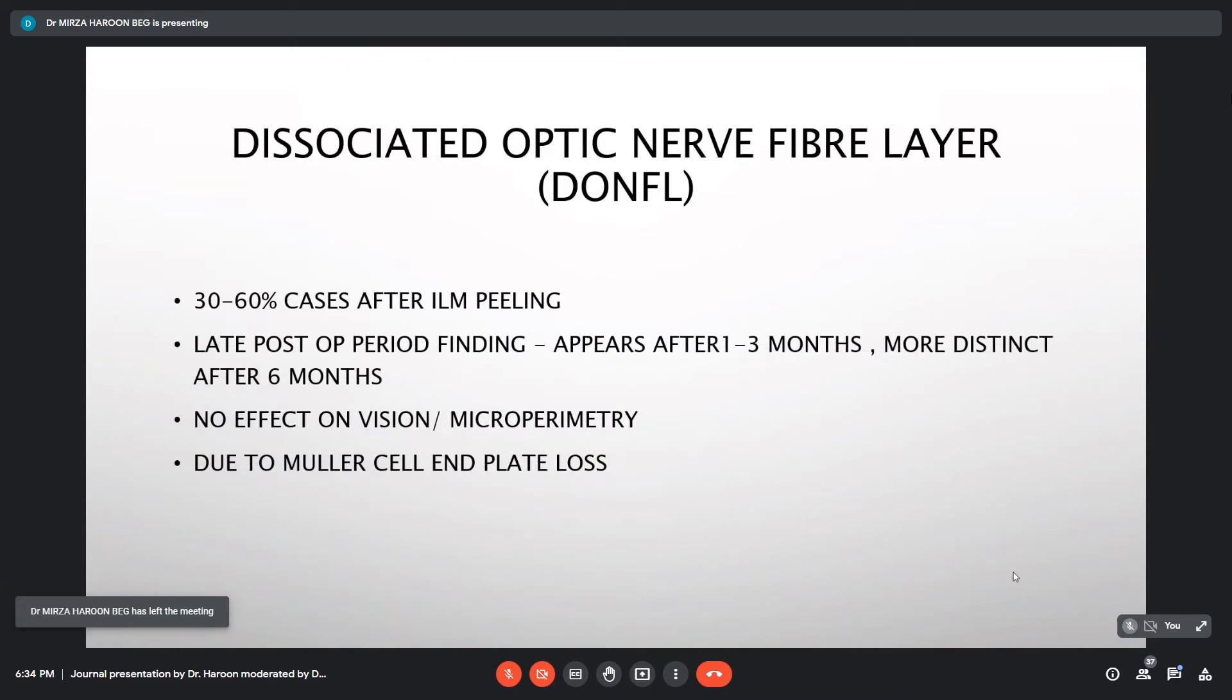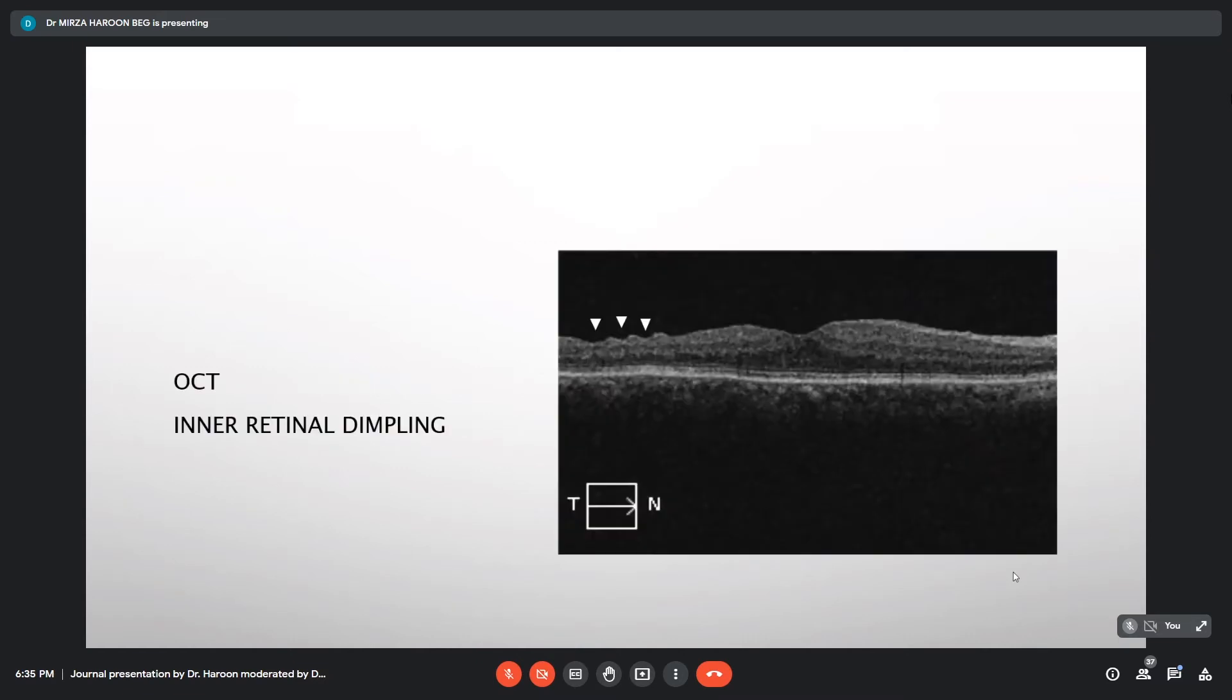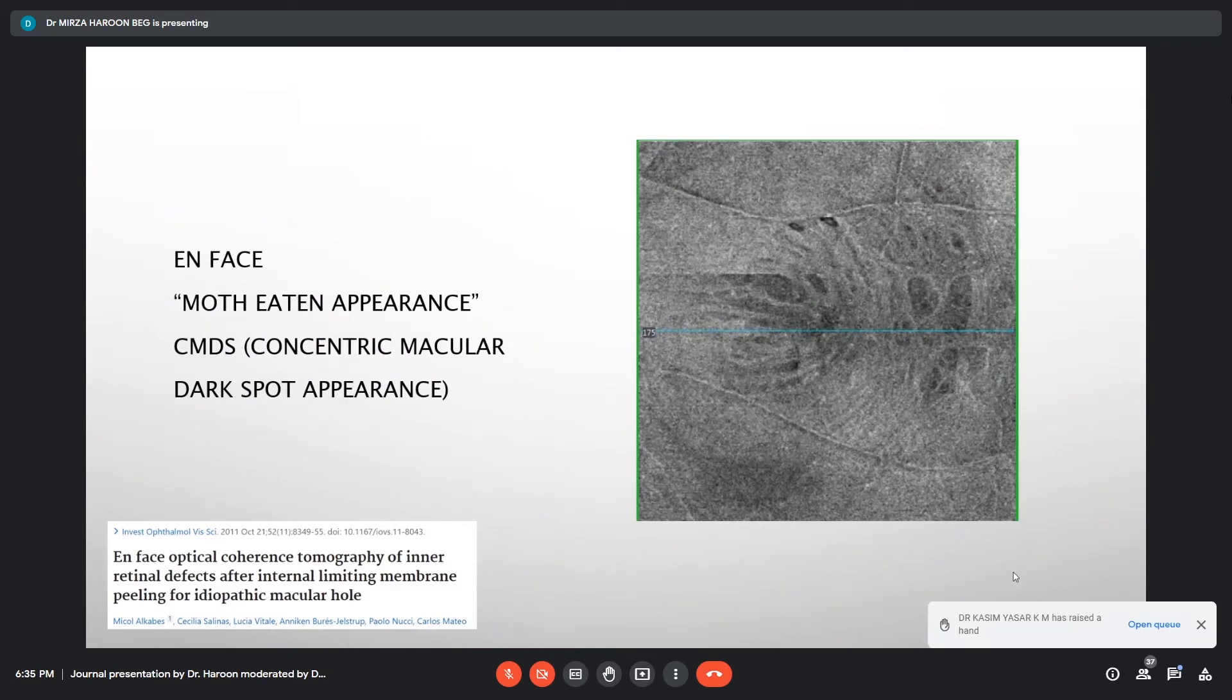So till now what do we know about this dissociated optic nerve fiber layer? It is seen in around 30-60% of the cases after internal limiting membrane peeling. It is a late post-op finding, appears after 1-3 months, more distinct after 6 months. There is no effect on vision nor microperimetry as compared to the cases which do not develop this feature, and it is probably due to Müller cell footplate loss. On blue filter, it is best seen on blue filter. It looks like a dark spray in RNFL arrangement. On OCT, inner retinal dimpling. On en face imaging, it has a moth-eaten appearance. This was named as concentric macular dark spot appearance, this feature on en face, because they came up with a theory that it is best seen on en face imaging rather than only the plain OCT scan.